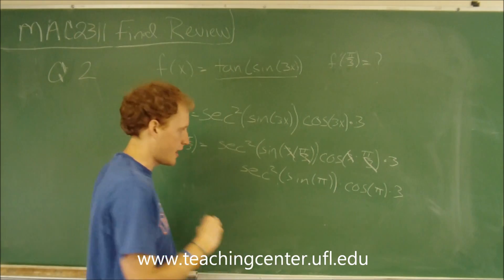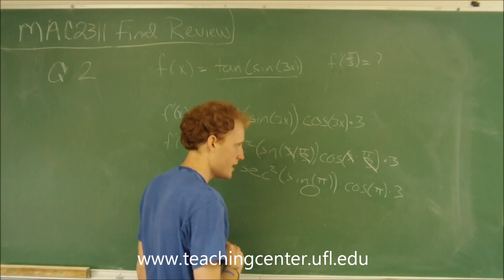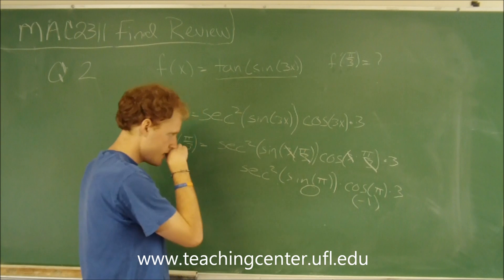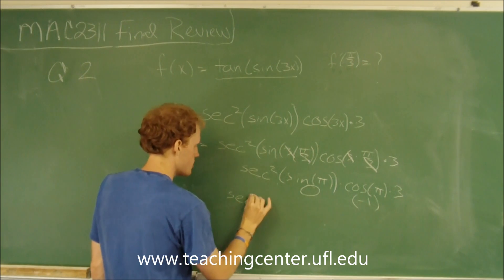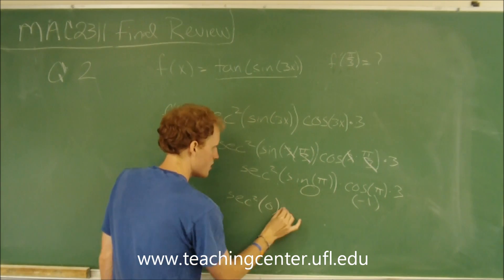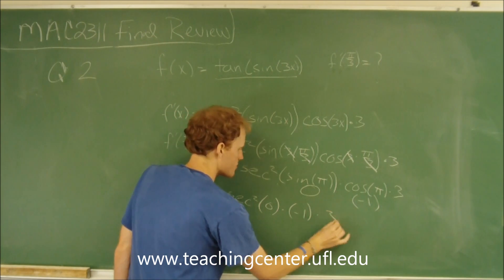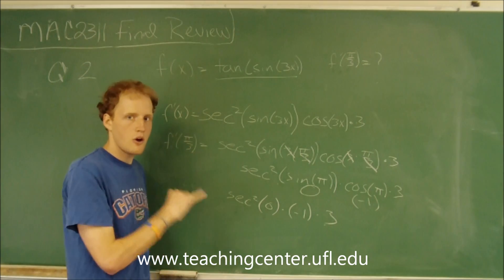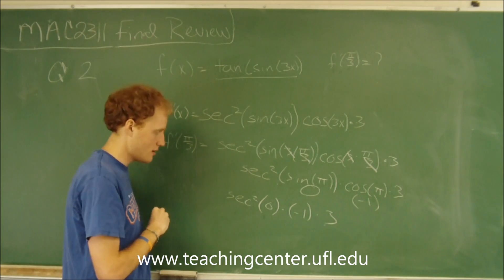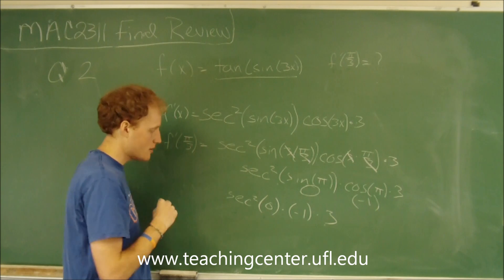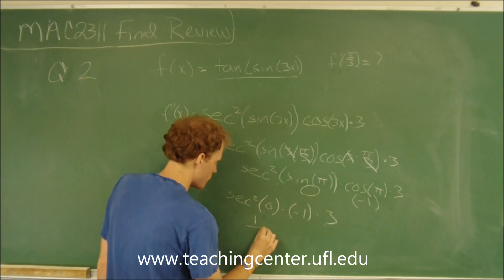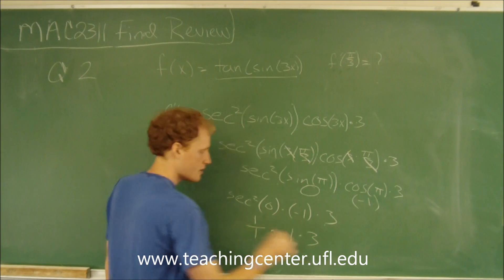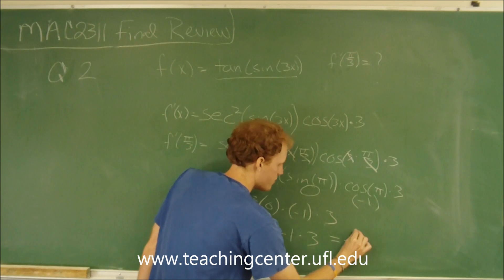So the sine of pi is 0, the cosine of pi is negative 1, so then we're left with the secant squared of 0 times negative 1 times 3. Secant squared of 0 is 1 over the cosine squared of 0. Cosine of 0 is 1, so it's 1 over 1 times negative 1 times 3, which equals negative 3.